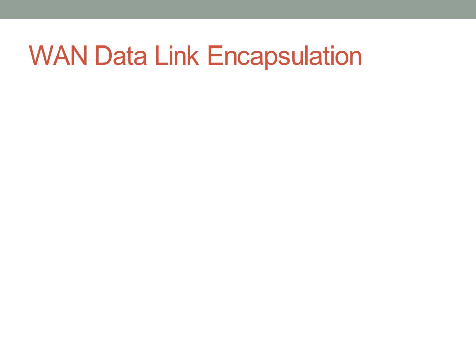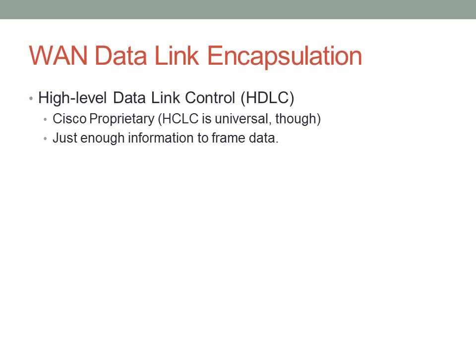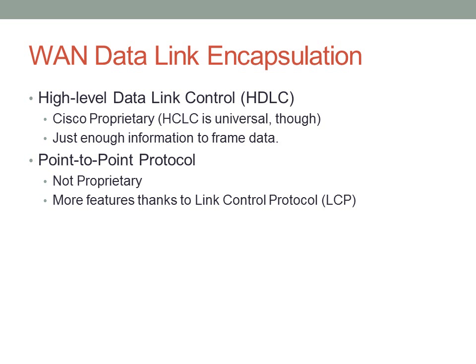WAN data link encapsulation works a bit differently — you need to encapsulate data in some sort of Layer 2 header, much like we did with Ethernet. There is HDLC, High-Level Data Link Control, which is Cisco proprietary. It contains just enough information to frame the data and send it out — very low overhead, and it's preferred if you're running Cisco equipment on both sides. There's also Point-to-Point Protocol, or PPP, which is not proprietary, so you can run it on non-Cisco devices. It has a lot more features, but unfortunately also a lot more overhead.